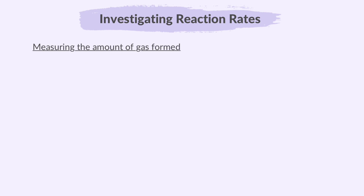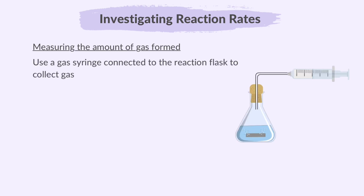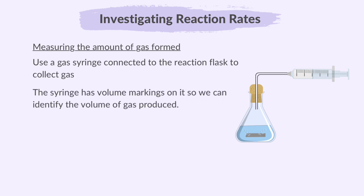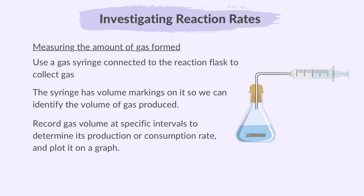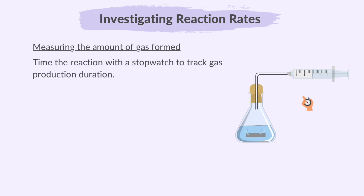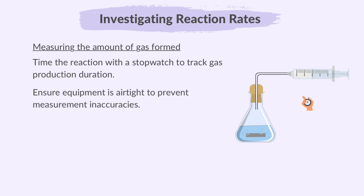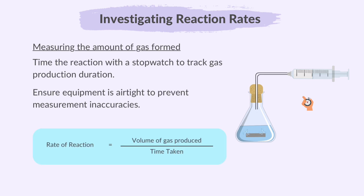For reactions that produce gas, gas collection is essential. We may use a gas syringe connected to the reaction flask to collect the gas produced. The syringe has volume markings on it so we can identify the volume of gas produced. Record gas volume at specific intervals to determine its production or consumption rate and plot it on a graph. Time the reaction with a stopwatch to track gas production duration. Ensure equipment is airtight to prevent measurement inaccuracies. The rate of reaction is calculated by dividing gas volume by time.